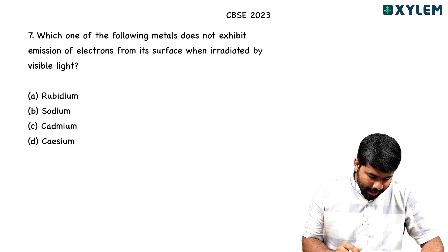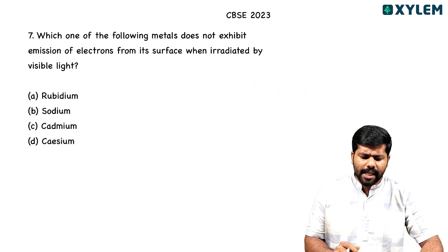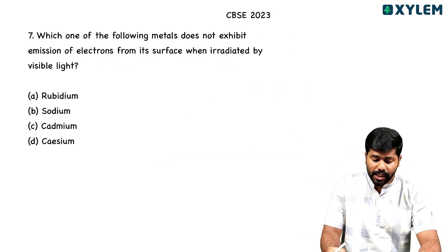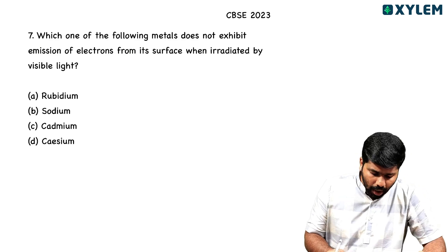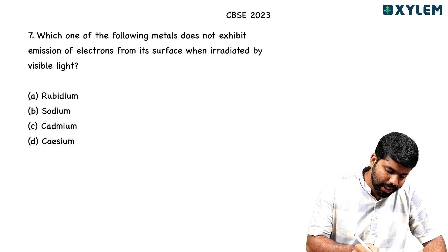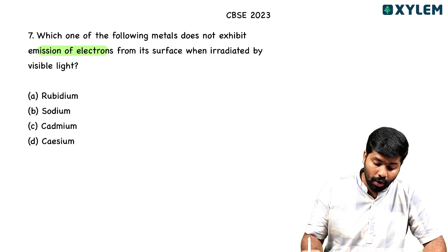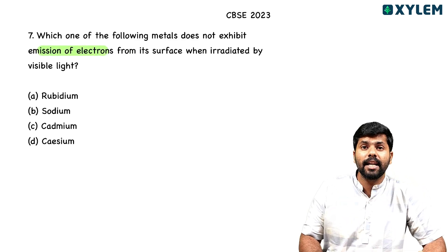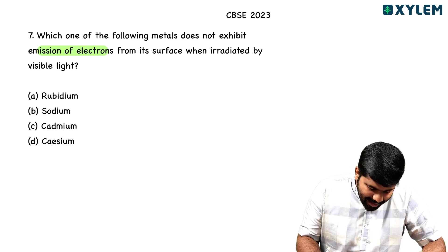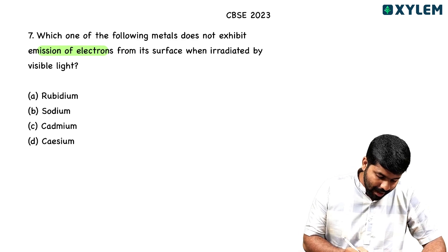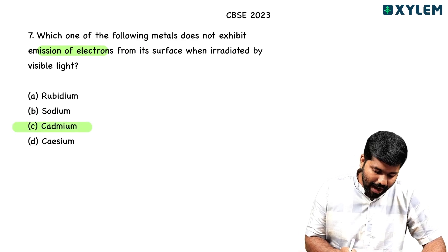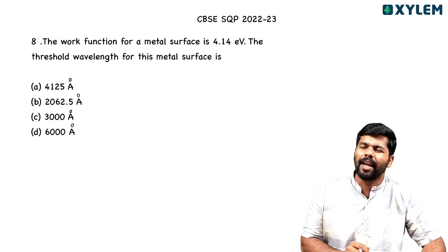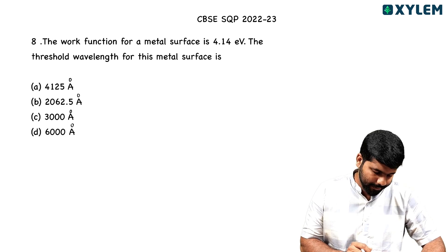The seventh question is easy. Which one of the following metals does not exhibit photoelectric emission? The answer is cadmium.